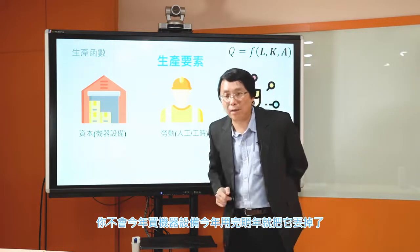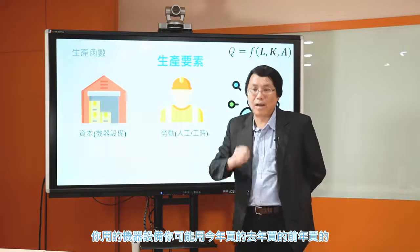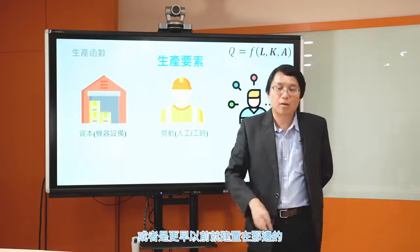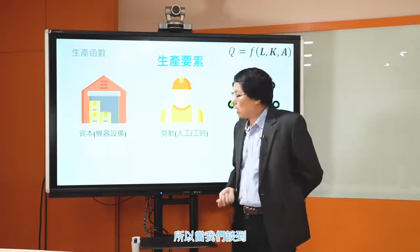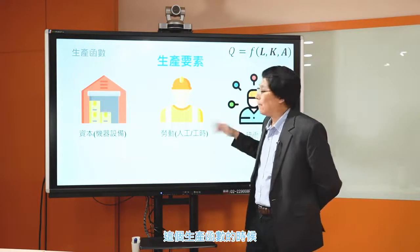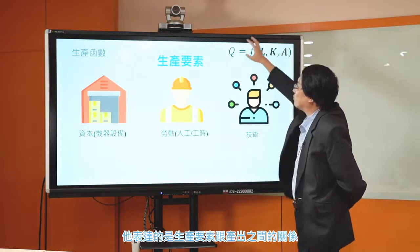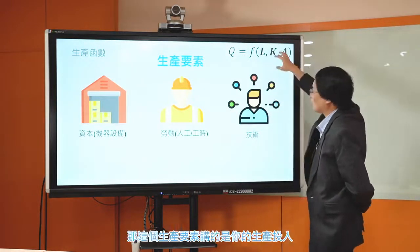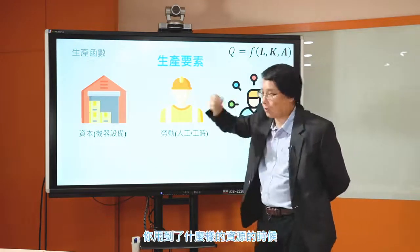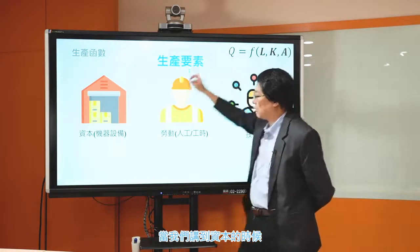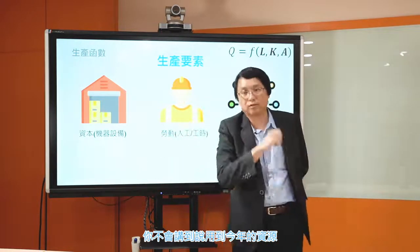投資是什麼？用白話來說，投資就是你今年所買的機器設備的量。可是你想想看，在工廠生產的時候，你所用到的機器設備是不是一定是今年買的？通常不是。你不會今年買的機器設備只用到今年用完明年就丟掉。你用的機器設備可能是今年買的、去年買的、前年買的，或甚至更早以前就建置在那邊的，你會一直用下去。